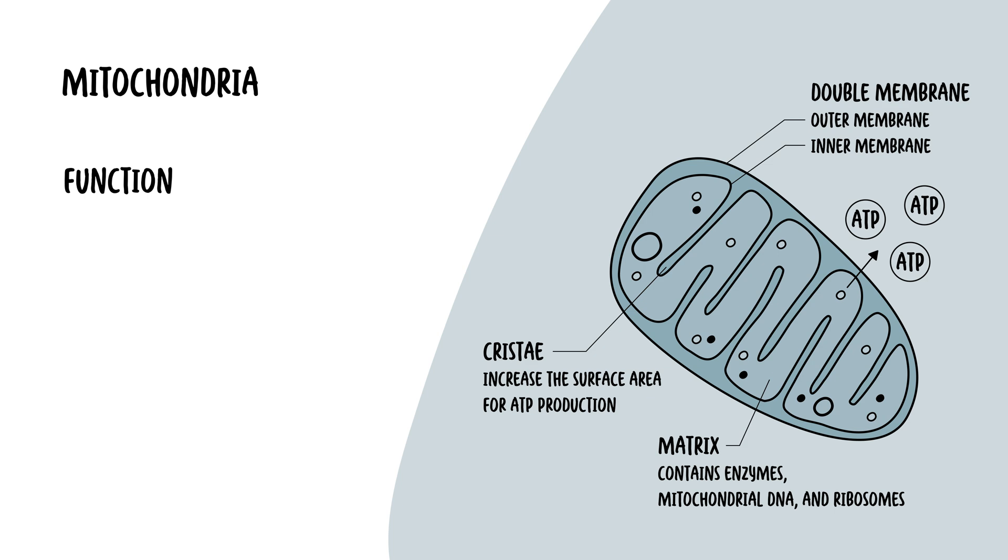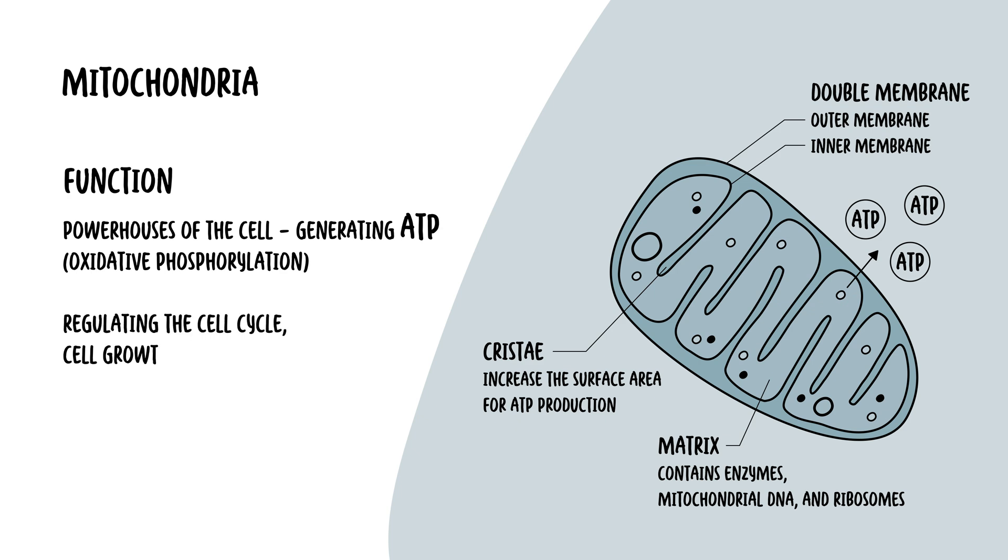The mitochondria are the powerhouses of the cell. They generate ATP through the process of oxidative phosphorylation. They're very important, because that's how we get our energy. They also play roles in regulating the cell cycle, cell growth and apoptosis, which is programmed cell death.